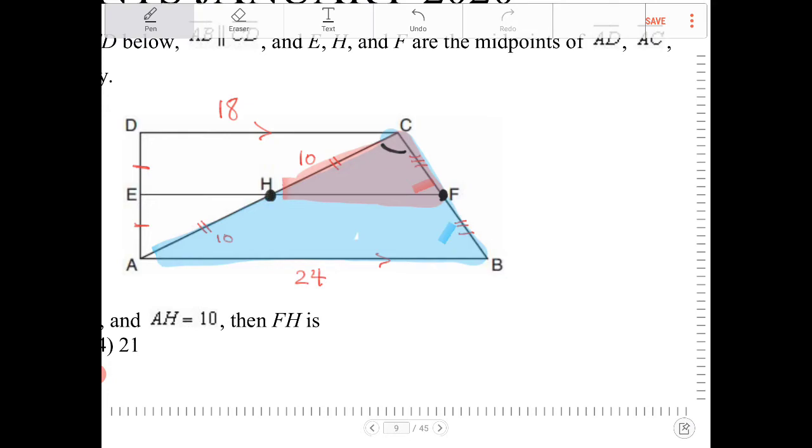What will end up happening is you'll end up with the side lengths HF and AB, therefore, are also going to be parallel as a result of this. So because of this, we then have these angles are going to end up being the same. So why is that important? Well, that's because our goal is to figure out what is HF.